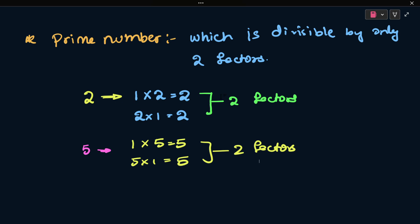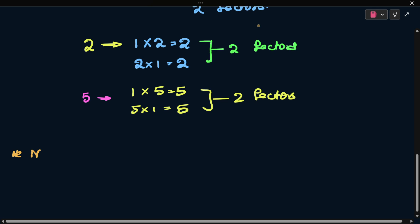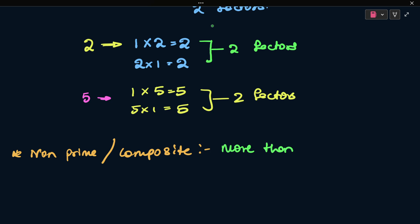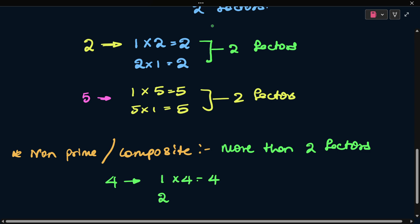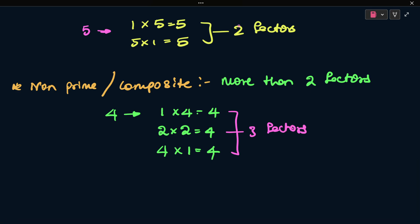If a number has more than two factors, it is not a prime number — it is a composite number, also called a non-prime number. For example, 51 is not a prime number because it is divisible by 3. Another example: 4 has factors 1, 2, and 4 — that is three factors. Since it has more than two factors, 4 is a composite or non-prime number.